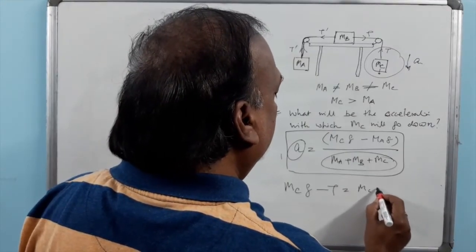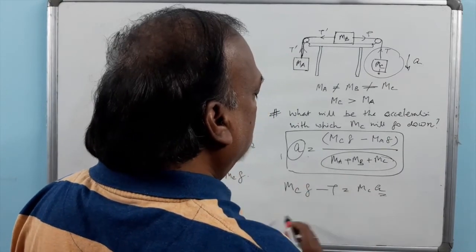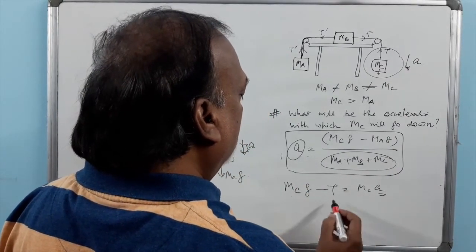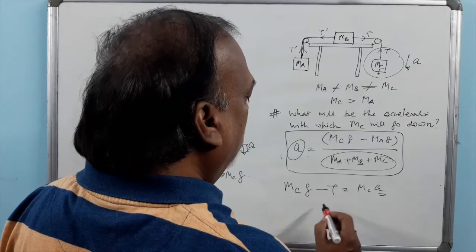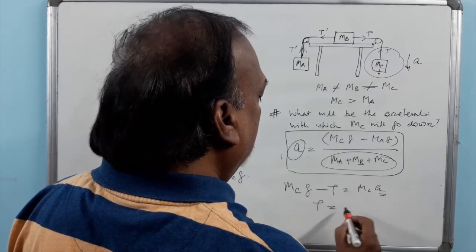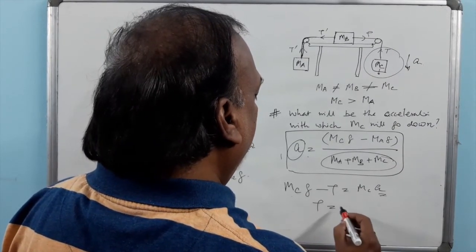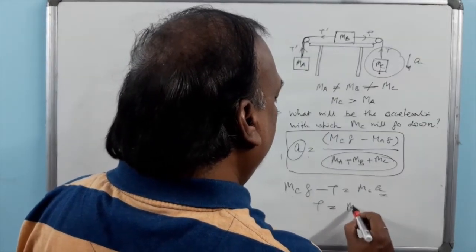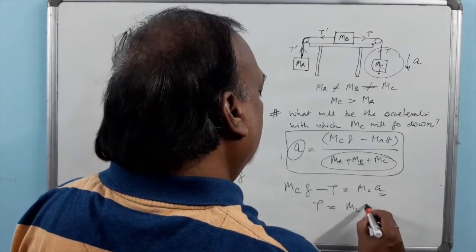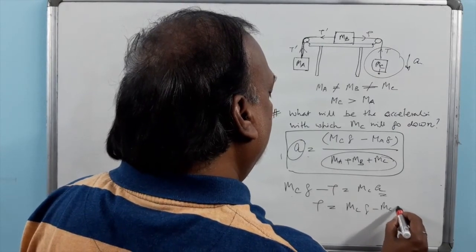If you are asked for tension T, use the free body diagram of MC. MCg minus T equals MC times A. Since we know A, MC, and g, we can find T as MC times g minus MC times A, which equals MC(g minus A).